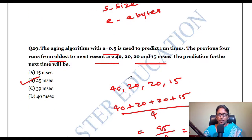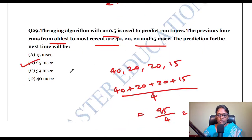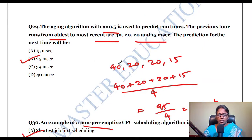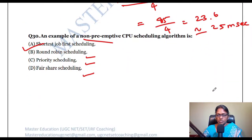The aging algorithm with a factor of 0.5 is used to predict run time. Previous runs from oldest to most recent are 40, 20, 20, and 15 milliseconds. To find the next prediction, calculate the average: 40+20+20+15 = 95, divided by 4 = 23.75, approximately 25 milliseconds.